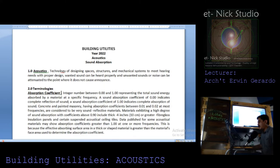Terminology: the absorption coefficient is a number between 0.00 and 1.00, representing the total sound energy absorbed by a material at a specific frequency. A sound absorption coefficient of 0.00 indicates complete reflection of sound, while a coefficient of 1 indicates complete absorption, meaning 100 percent of sound is absorbed.